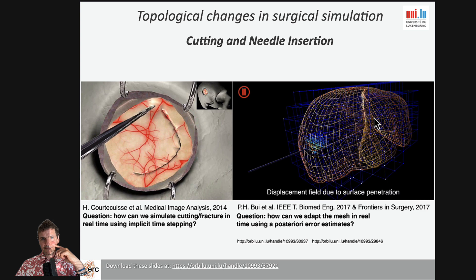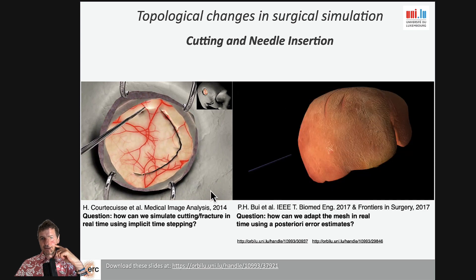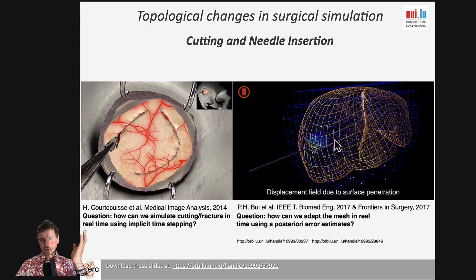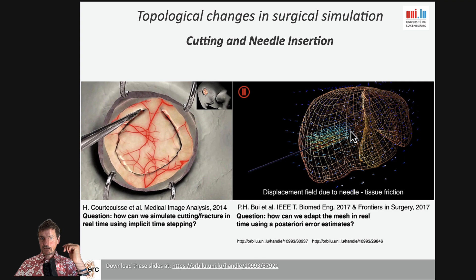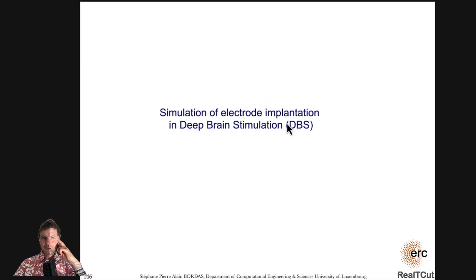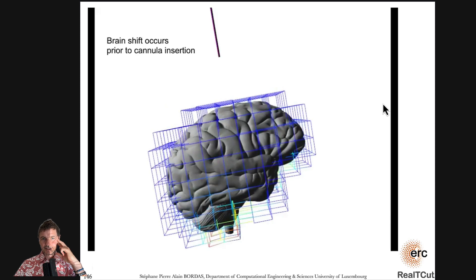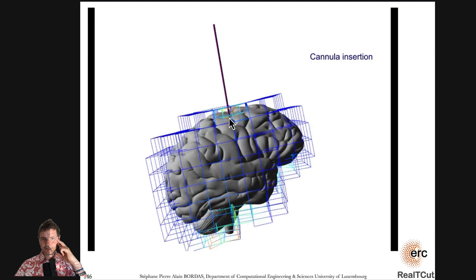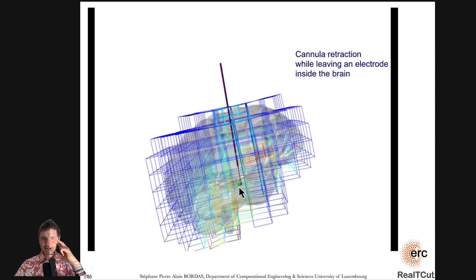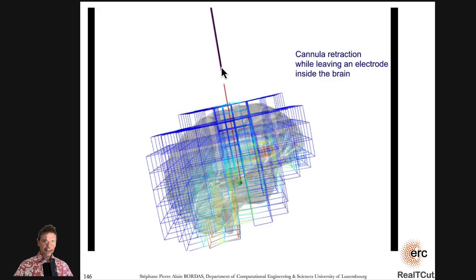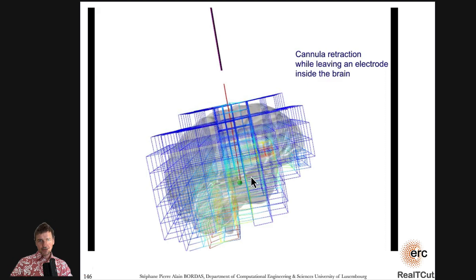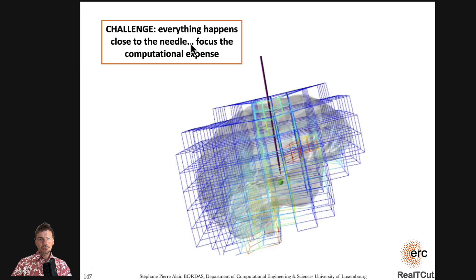The second problem is inserting a needle inside a liver. These problems are very similar in that you have localization — here it's a crack, a fracture, a cut, and here it's a needle being inserted inside the liver. These simulations are all in real time. This is a brain, this is a cannula which is rigid going down, coming in, and reaching the target. The target is the zone in the brain where you need to stimulate to decrease the symptoms of Parkinson's disease. The cannula inserts an electrode which is flexible and will deform as the brain deforms.